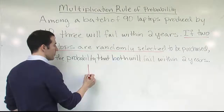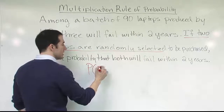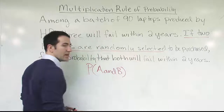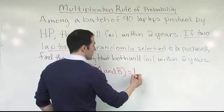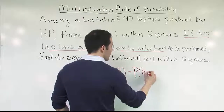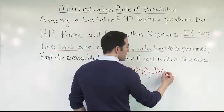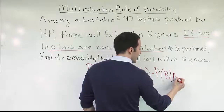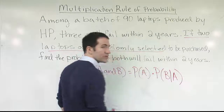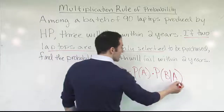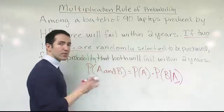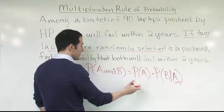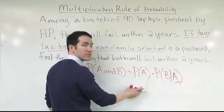Before we start the problem, let's look at the formula in the abstract sense. The probability of A and B for the dependent case is the probability that A occurs times the probability that B occurs given that A has happened or occurred. The first probability I calculate is just the probability that event A occurs — that's basic probability, nothing new there.